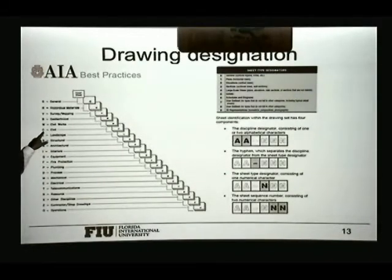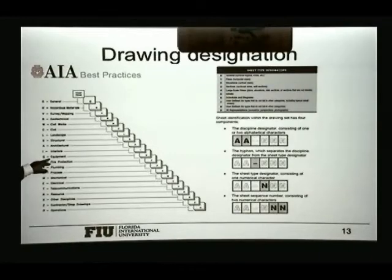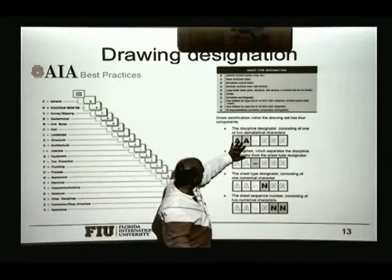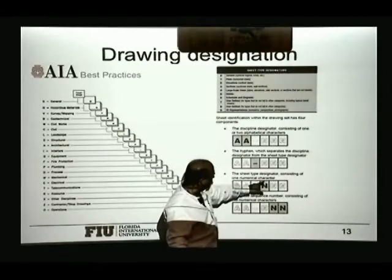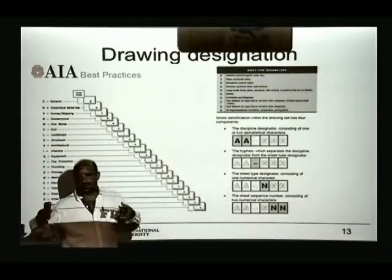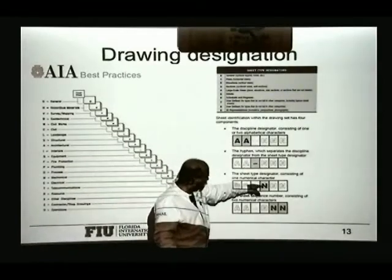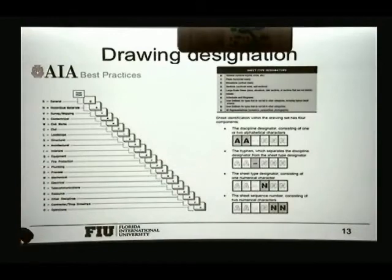If they start with the letter C, those are civil drawings. If we have E, that will be electrical. P is generally for plumbing. F for fire protection. Q is for equipment, and so on. Each one of those drawings will have a letter that indicates what type of drawing it will be. That's the beginning of your code. Then you will have another number that represents either a schematic or elevation or something with a special designation. The two last numbers are consecutive numbers for that group.